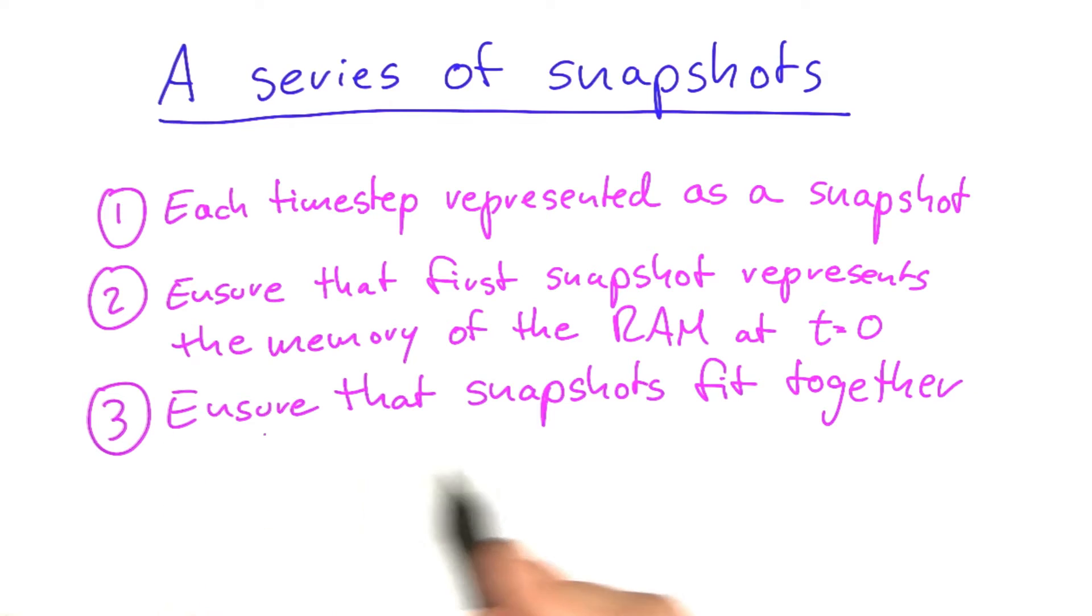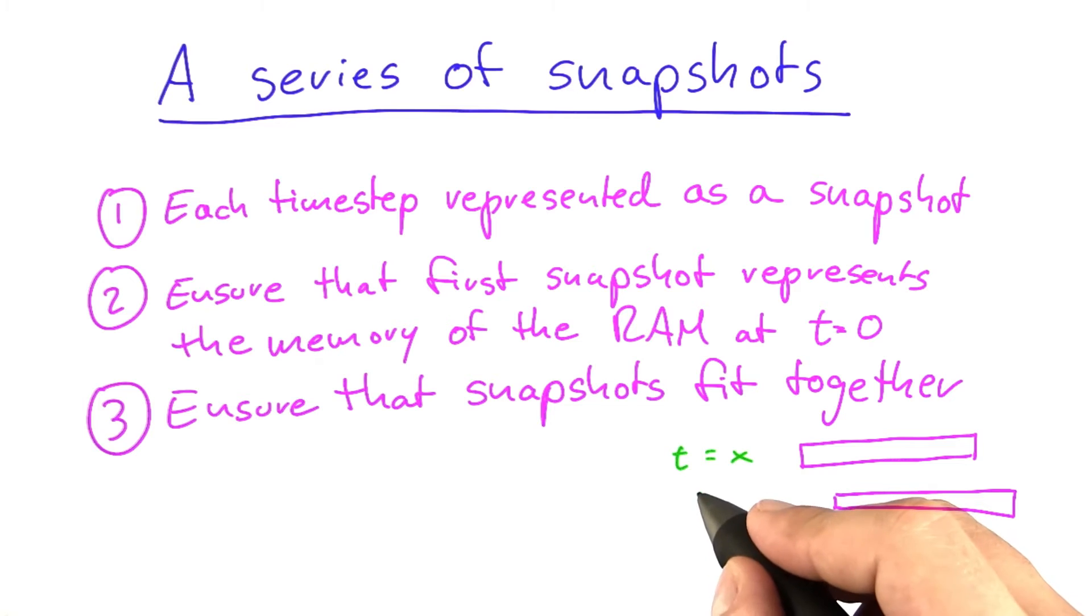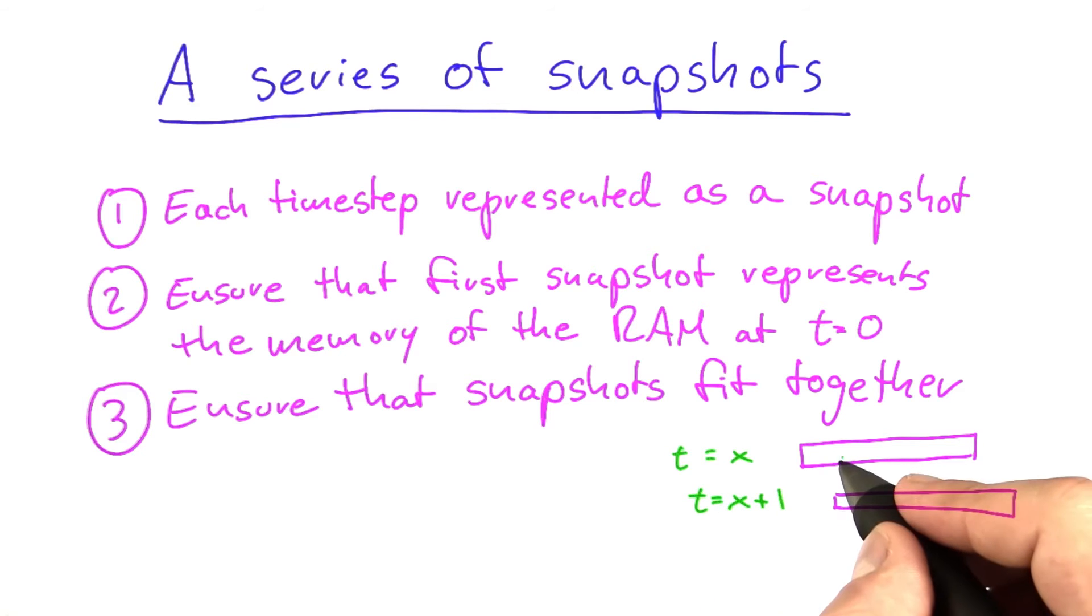Then, thirdly, we have to ensure that the snapshots fit together. What I mean by that is even though it's a non-deterministic RAM, if at a certain point in time, say t equals x, it is in a certain state, then at the next time step, t at x plus 1, there's only a limited number of choices or potential states that machine can be in.